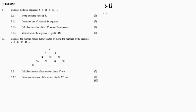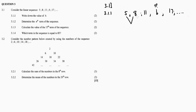3.1.1: Write down the value of b. The sequence is 5, 8, 11, b, and then 17. To find the value of b, in a linear sequence the key is the common difference. What is 8 subtract 5? It's 3. And 11 subtract 8? Again it's 3.